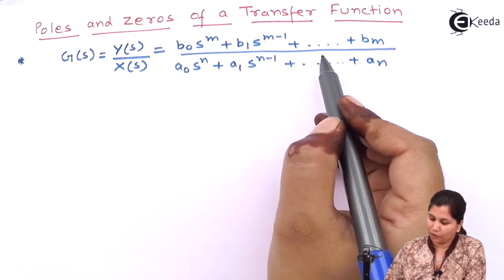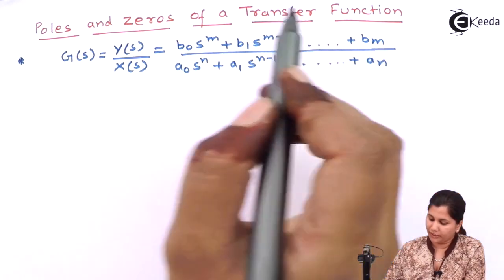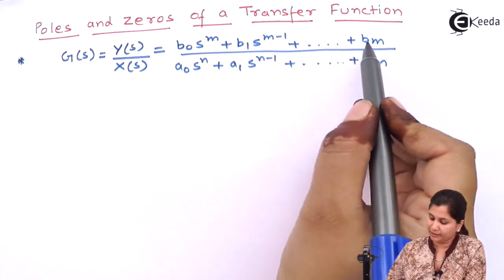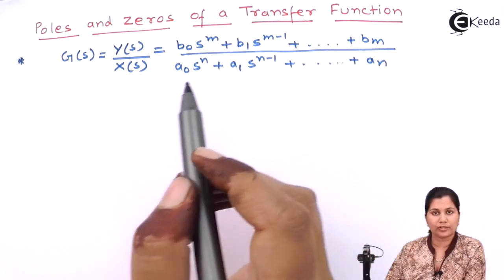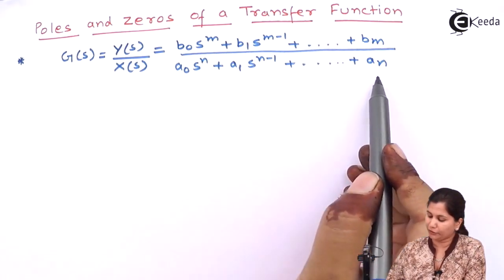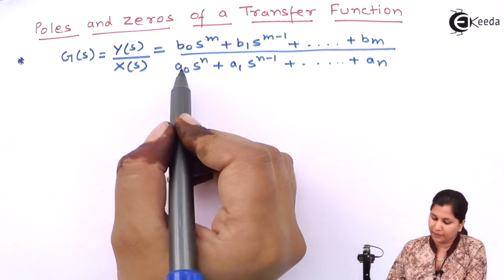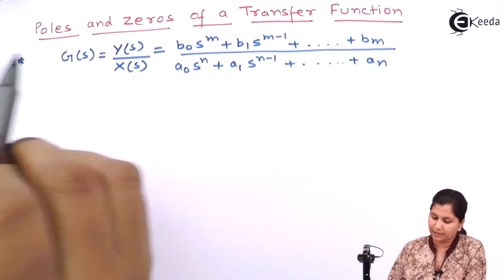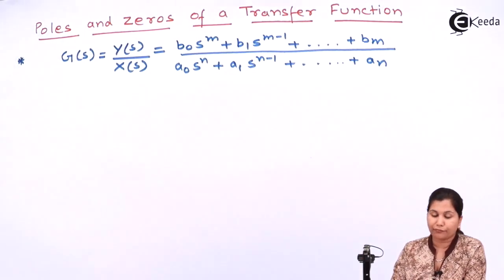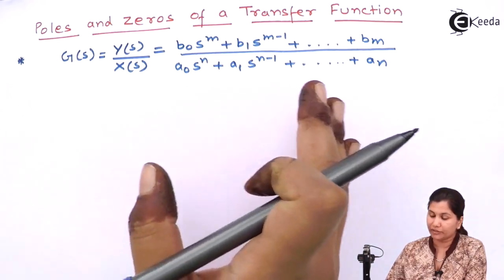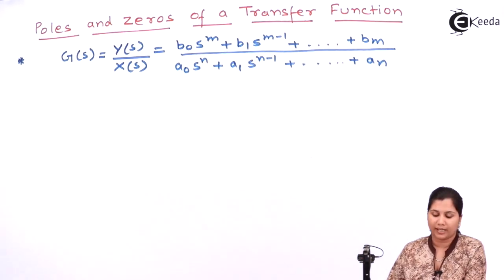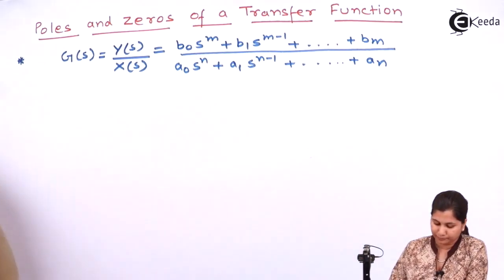The numerator polynomial of the transfer function has M roots and the denominator polynomial has N roots. If we represent this transfer function in factorized form, that is in the form of its roots, then it will be as follows.